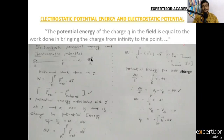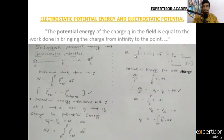Apply the external force to q', moving it from point R to point P. q' is the charge moving some variable distance dr — dr bar means variable distance. So, the external work done on charge q' equals W, which is the integral from R to P of the external force times the variable distance traveled by q'.